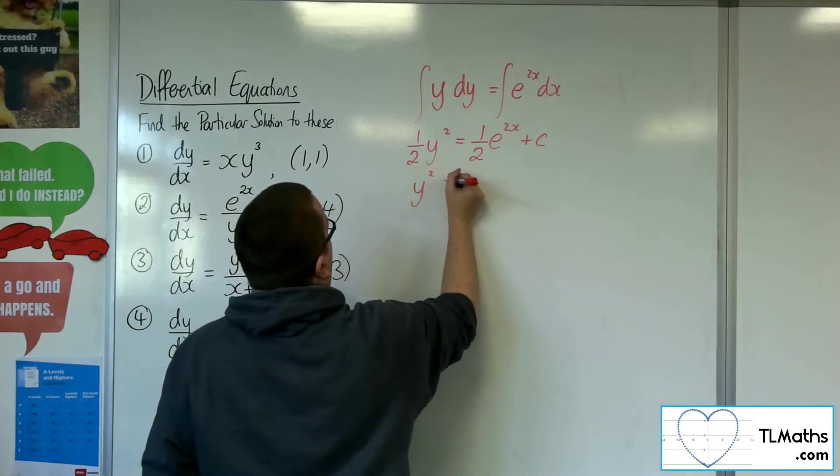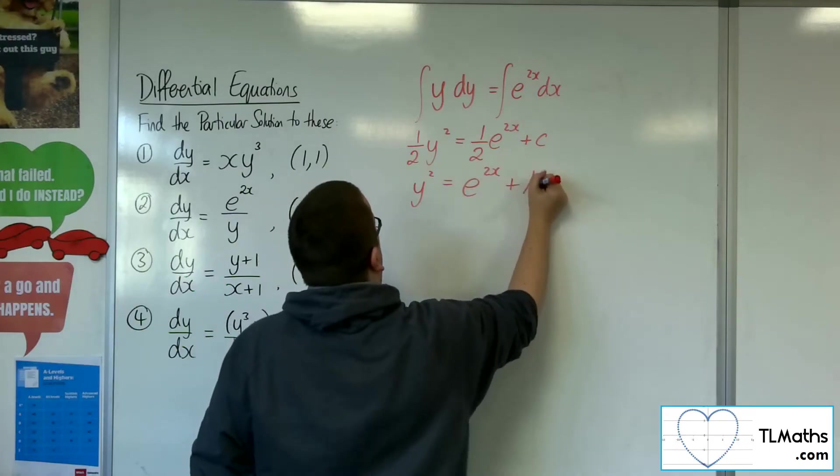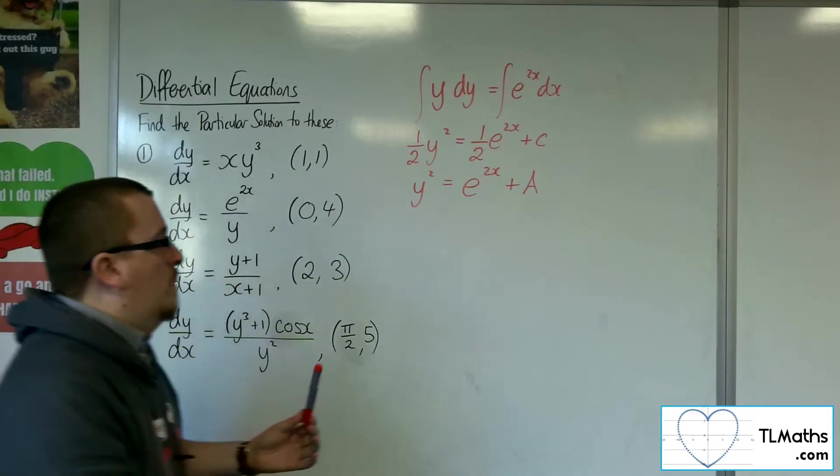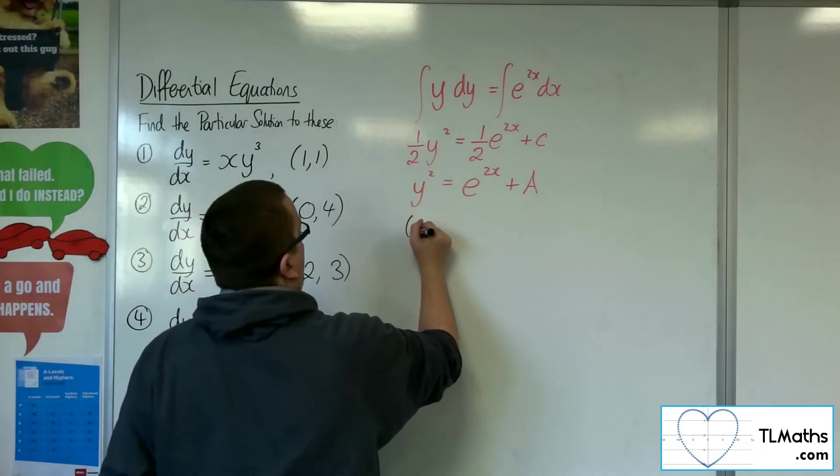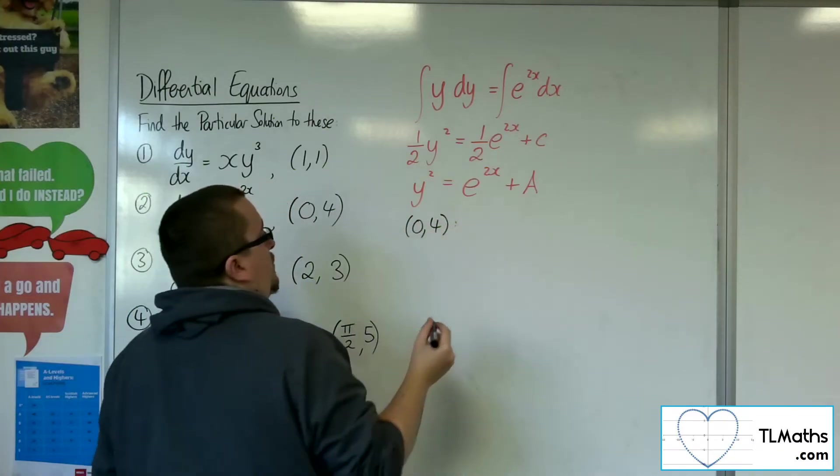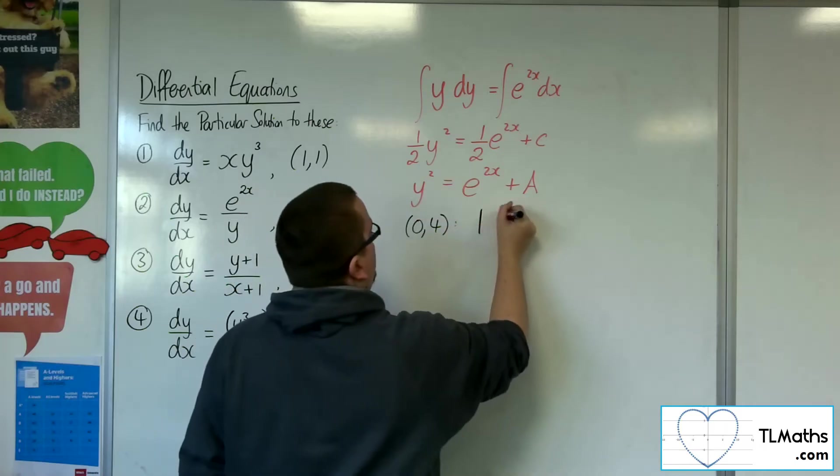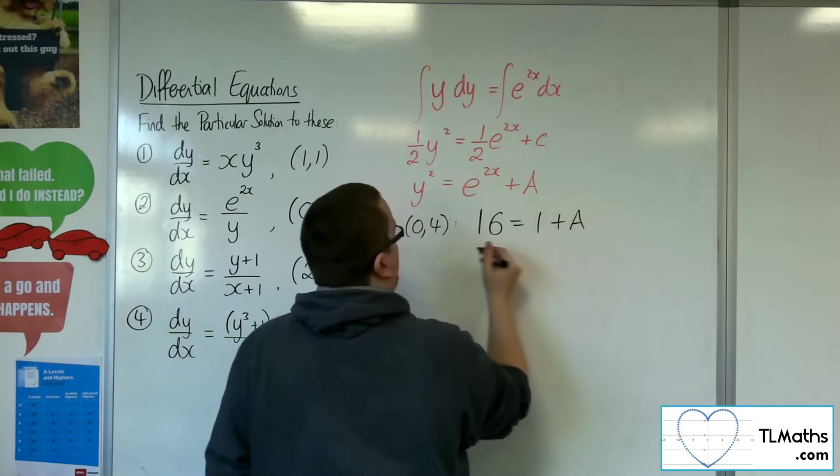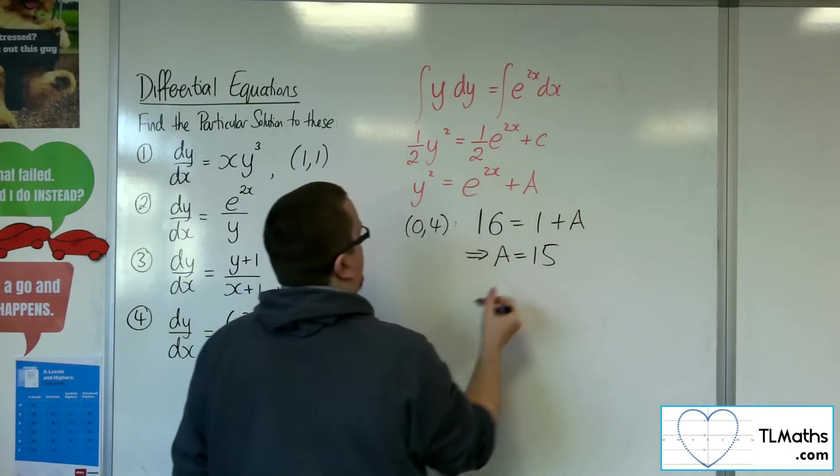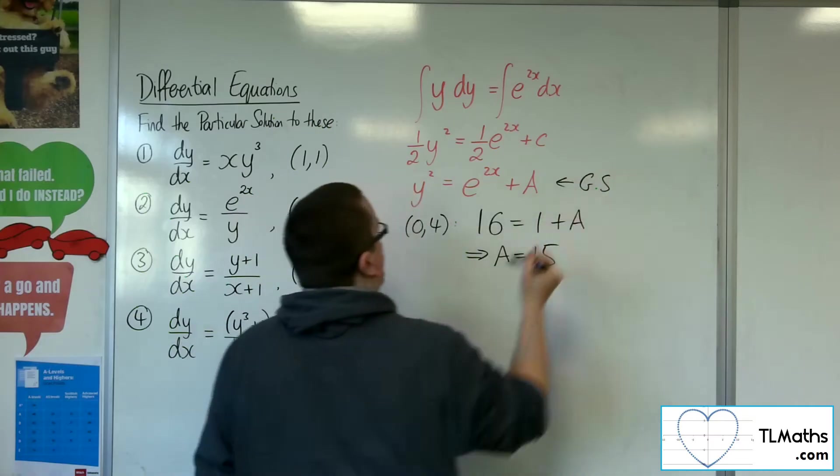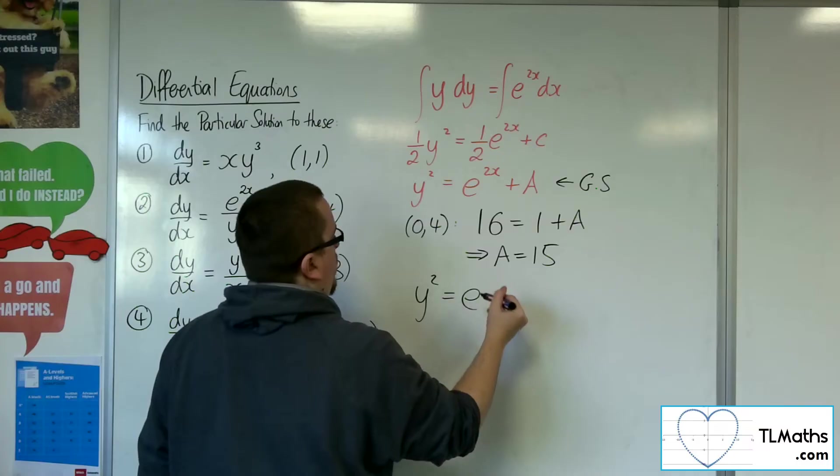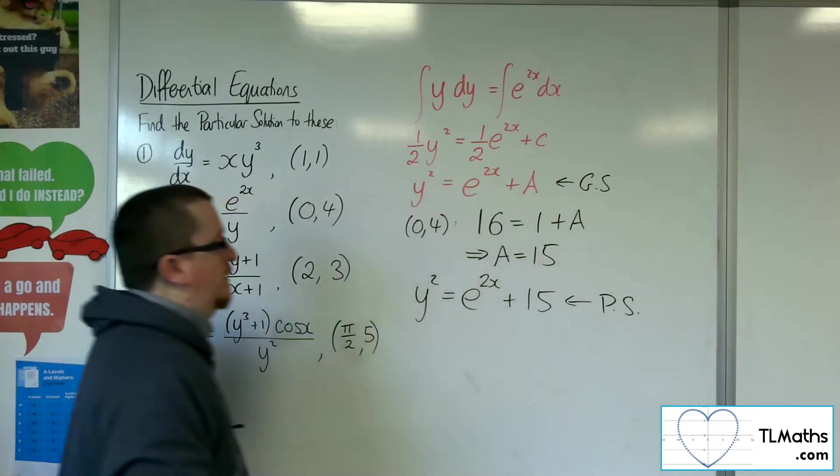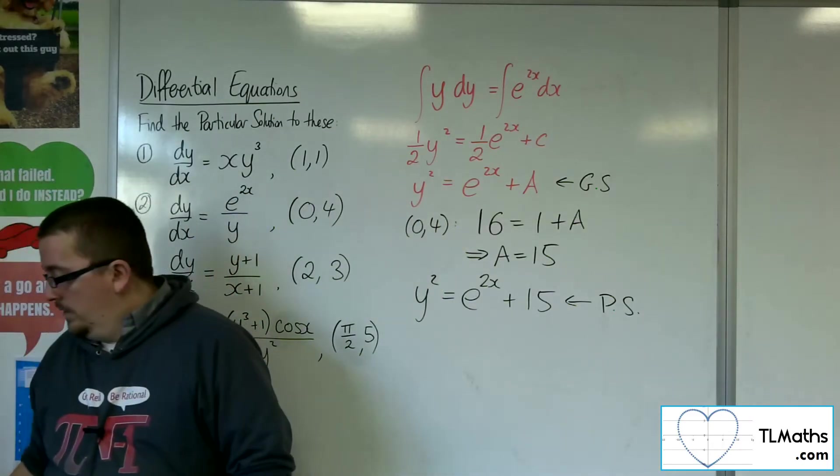Multiply through everything by 2. And at this point, I would then substitute in the 0, 4. I won't bother square rooting for the same reason as we did in the previous example. So substituting in 0, 4, we're going to get 4 squared, so 16 is equal to e to the 0, which is just 1, plus a. So a would be 15. Whereas that was the general solution, the particular solution would be y squared equals e to the 2x plus 15. That's question number 2.